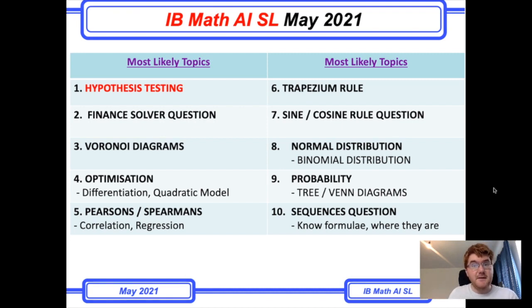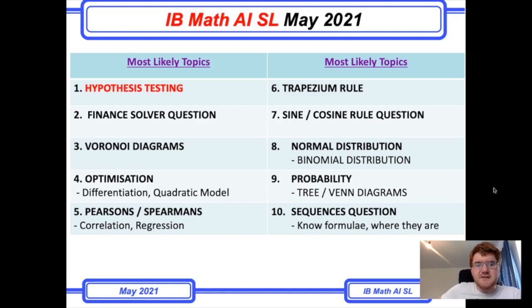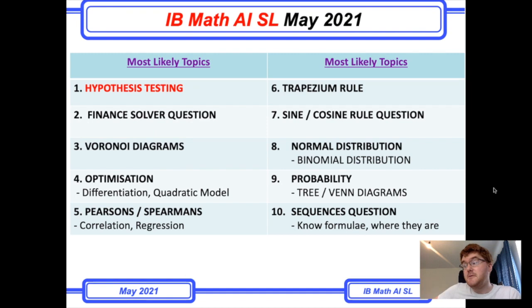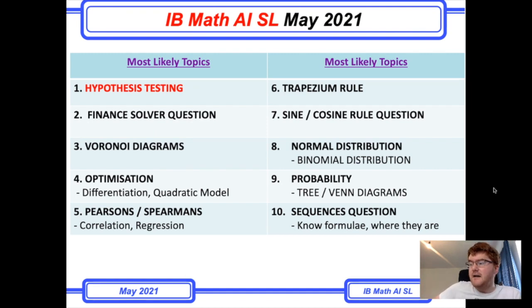From what I've seen, there'll be some kind of question on correlation and regression — working with Pearson's rank, Spearman's rank, and knowing when one is more effective than the other. For example, Spearman's rank is less affected by outliers.